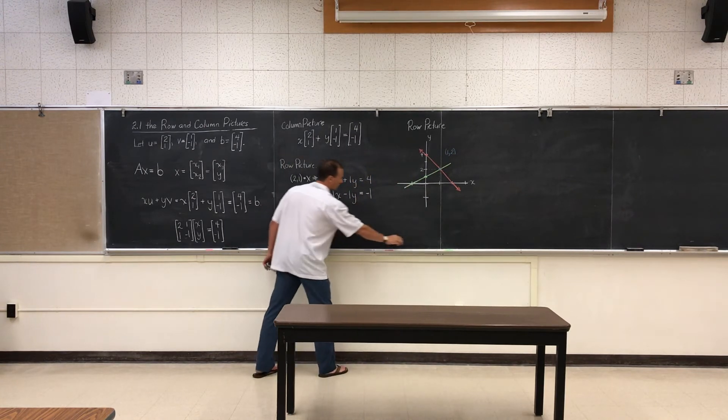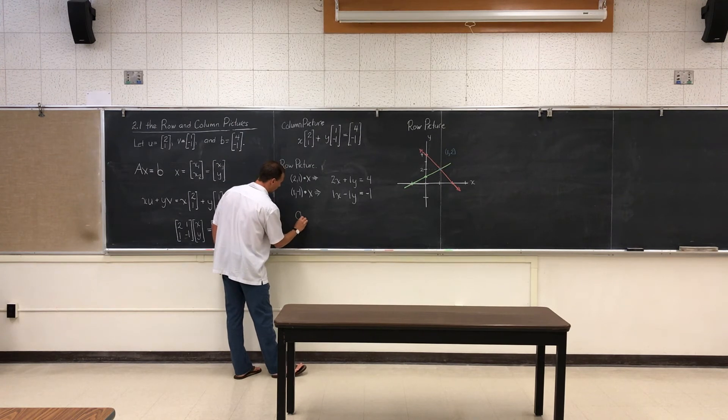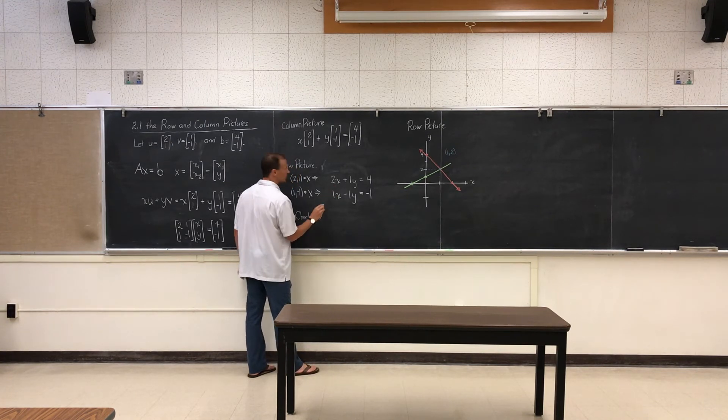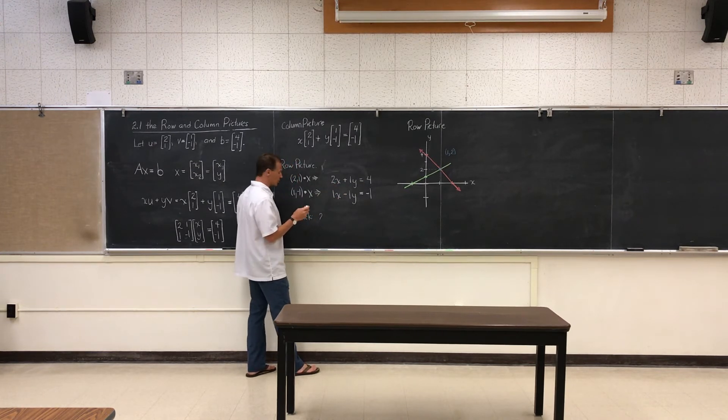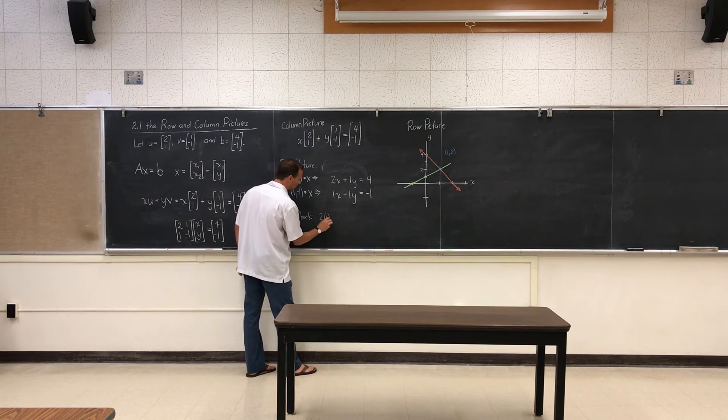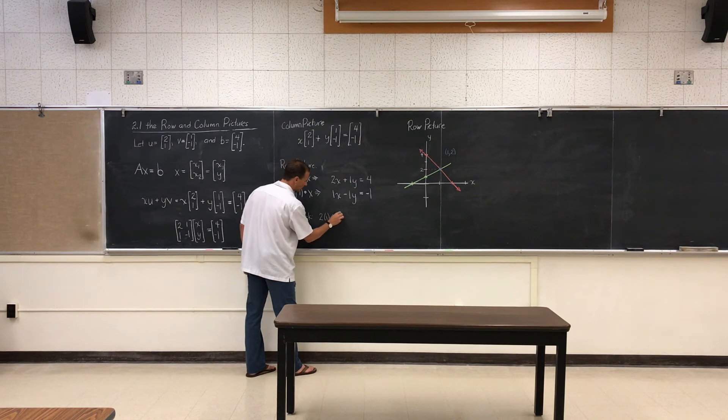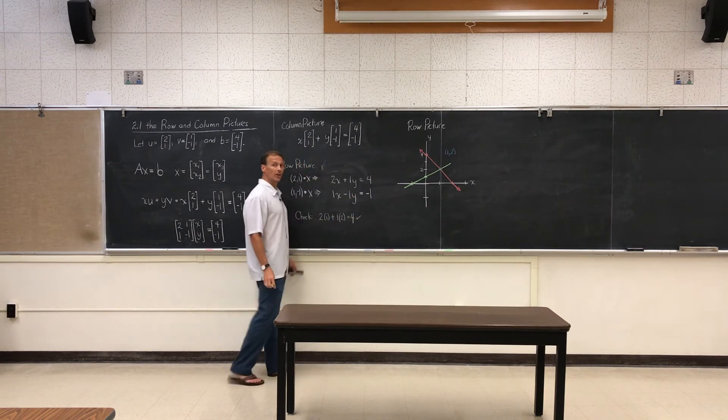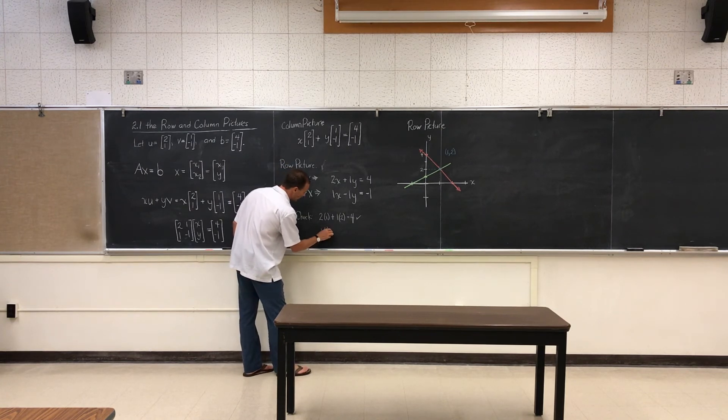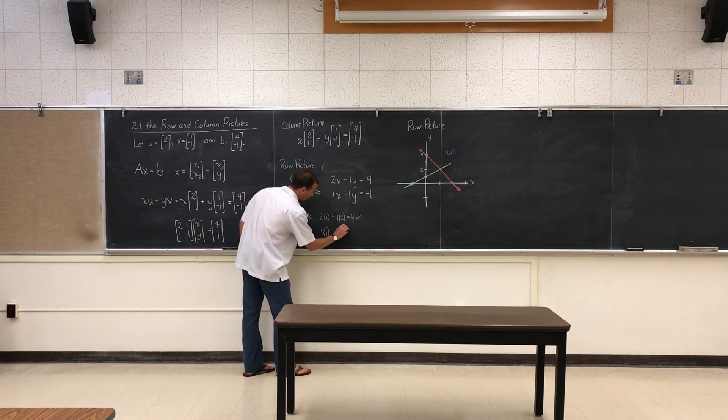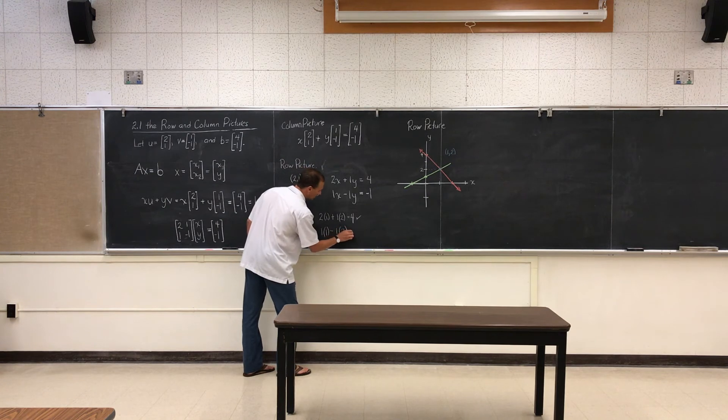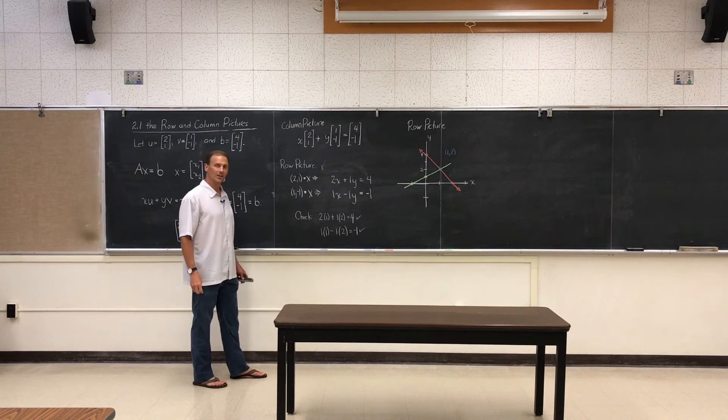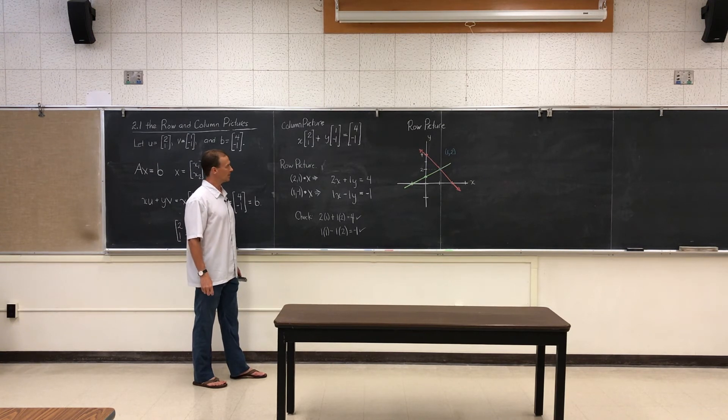Well, let's check. Let's do a check. Let's check that's our solution. So we're going to put (1, 2) into each equation and make sure the equation holds true. So this is 2 times X which we said is 1, plus 1 times 2. And sure enough, that's 2 and 2, that is 4. So it works in our first equation. Let's check our second one. That says that 1 times 1 minus 1 times 2. That's 1 take away 2, that's going to be negative 1, which is what we want. So that's our solution. The solution is the intersection of two lines in a single point. That's the row picture.